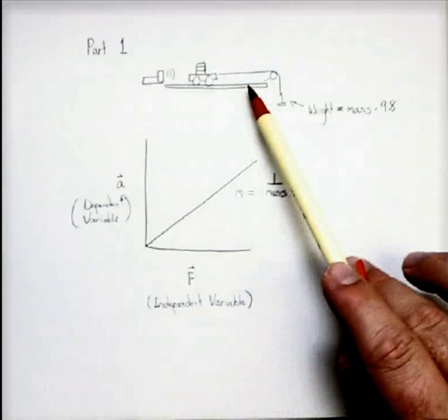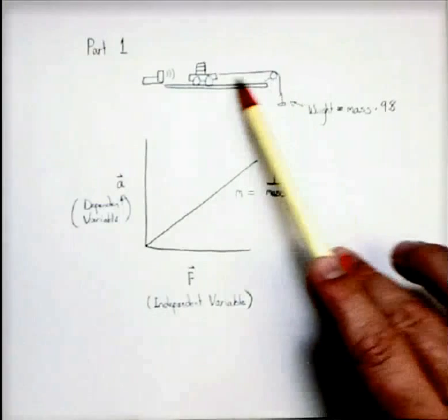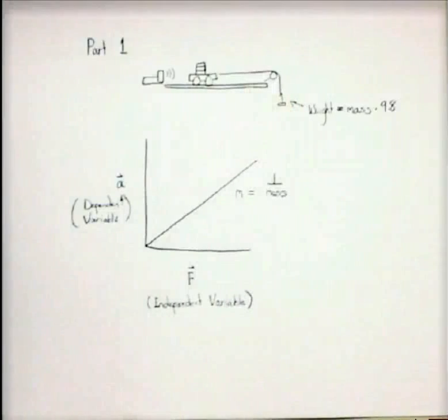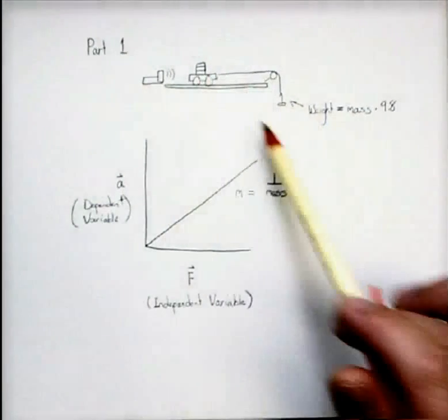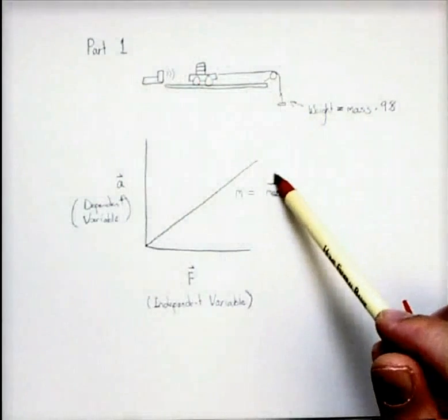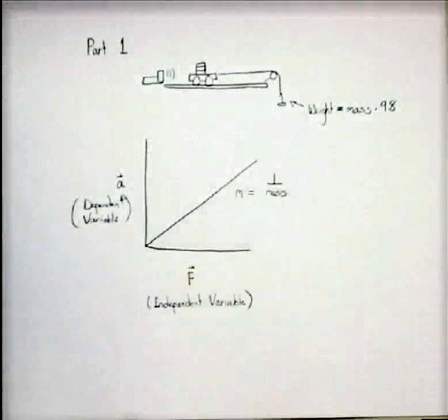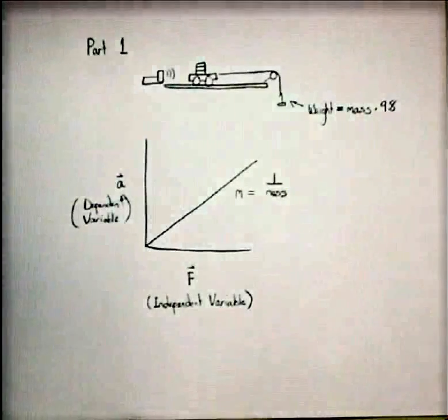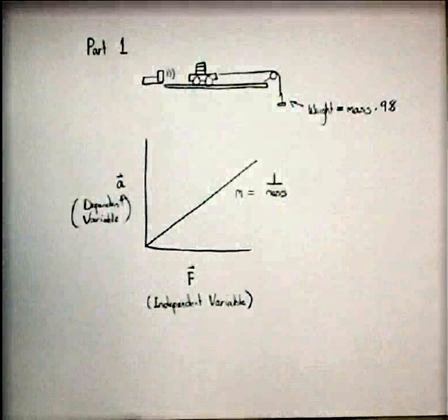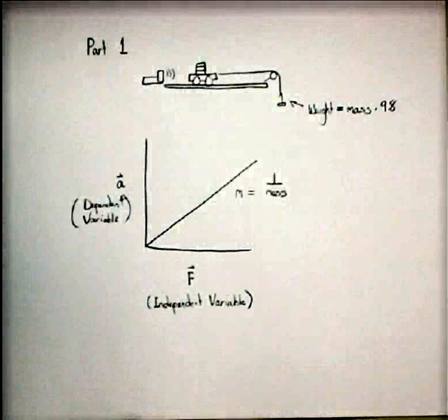and if you really wanted to get super technical about it, the mass of the string, but the fishing line that we used can be ignored against the masses of all the rest of this. But if you add up all those masses and take 1 divided by that value, that should give you the slope of that line, which is a very fascinating result. And we'll see what this means a little bit later.